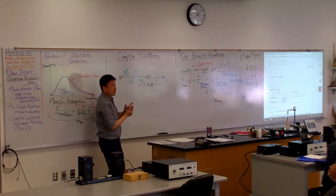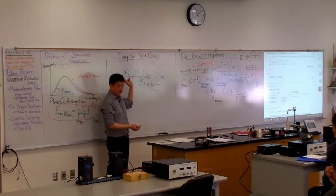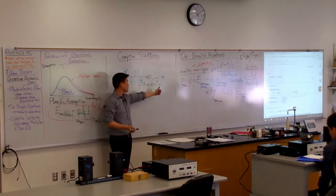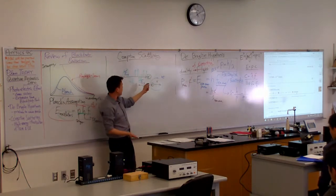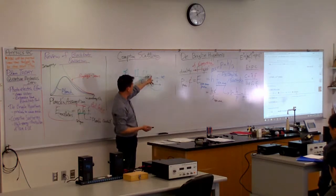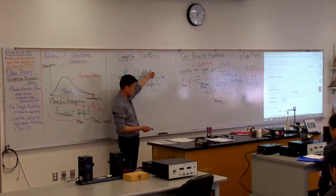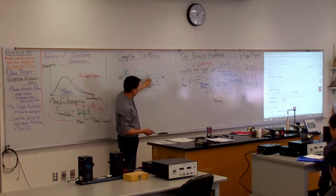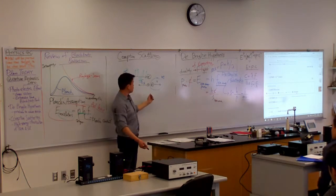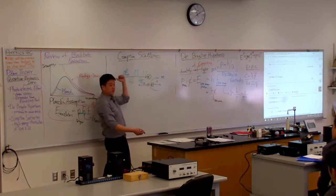Now, you can still understand why it would scatter, why you would have electric field coming backward. You would think of, all right, this electric field oscillating, it meets this electron, it causes the electron to oscillate up and down with it. And this oscillating electron would re-radiate some of the electromagnetic wave backward this way, right?